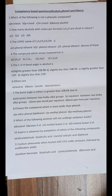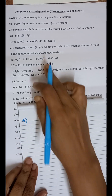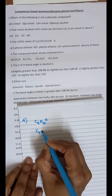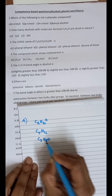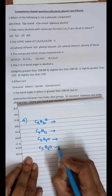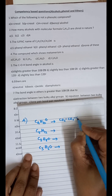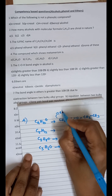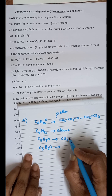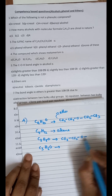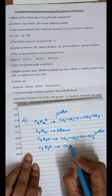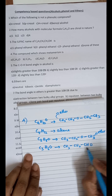Question 4: which compound shows metamerism? The options are C4H10O, C5H12, C3H8O, and C3H6O. Let us identify the functional groups. C4H10O is an ether, C5H12 is an alkane, C3H8O is also an ether, and C3H6O corresponds to an aldehyde structure (CH3CH2CHO).